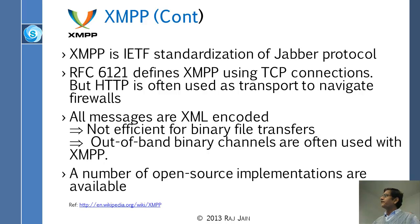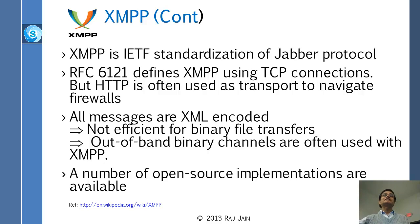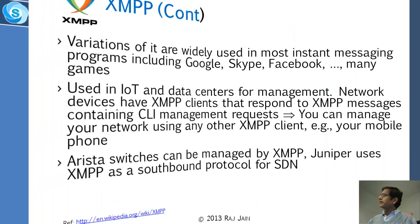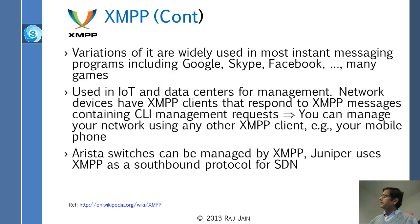XMPP came to IETF from a community called Jabber, which was being used for chatting. It was so successful they made it a standard, and there is now an RFC describing it. All messages are XML encoded — that's why it's called XMPP — making it very extensible. You can add new fields and new things to messages. The only downside is it's not great for binary files since everything must be converted to ASCII, so people use out-of-band binary channels for that.